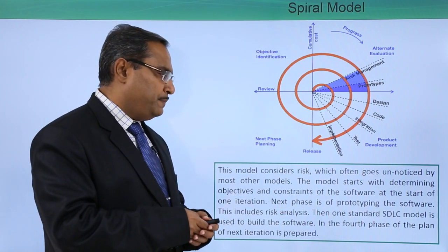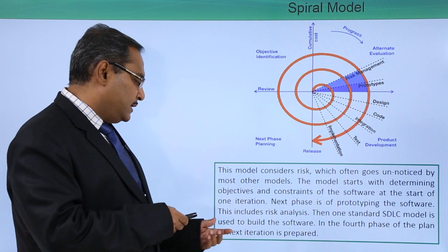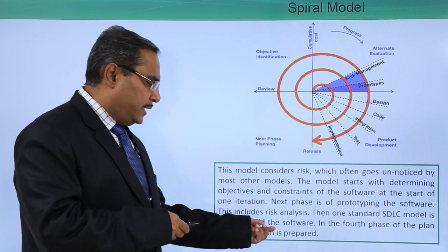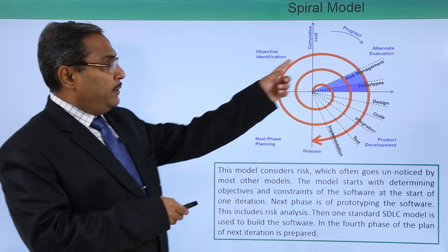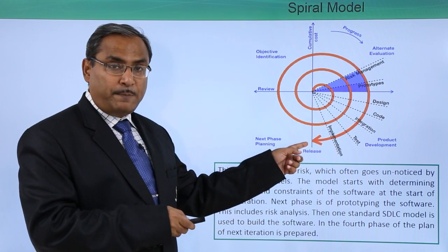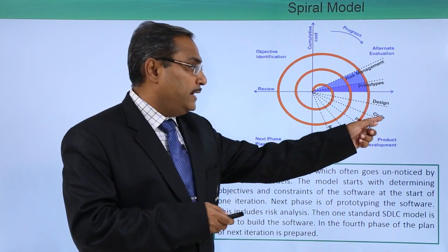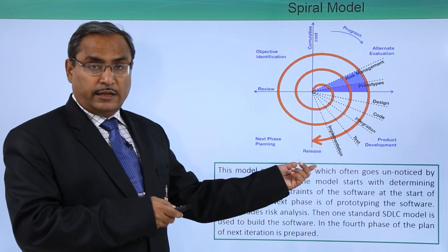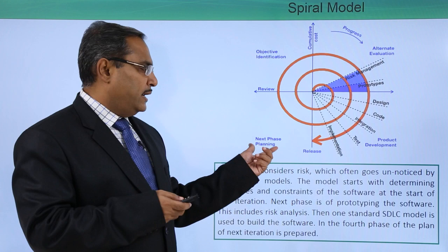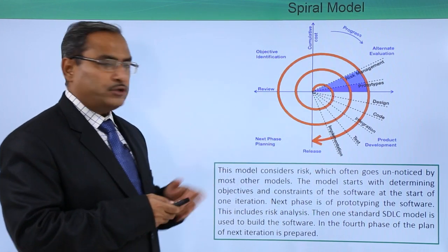The next phase is prototyping the software, which includes risk analysis. Then one standard SDLC model is used to build the software, and in the 4th phase the plan for the next iteration is prepared. There are four different phases, and the product development phase uses one of the SDLC life cycle models for design, coding, integration, testing, and implementation. A release is obtained and this process is iterative — it loops. Then next planning, objective identification, cumulative cost, and progress are obtained and the process is repeated.